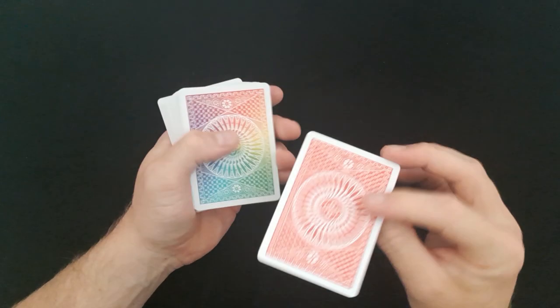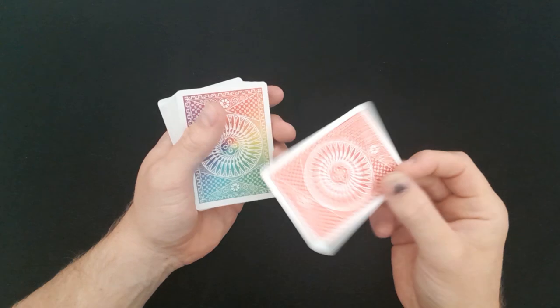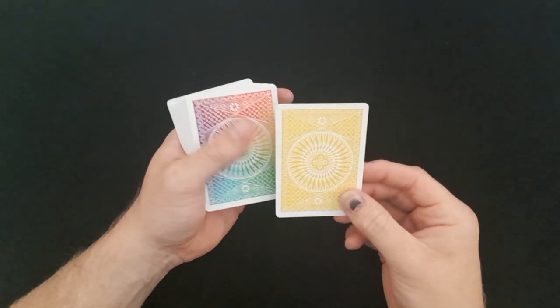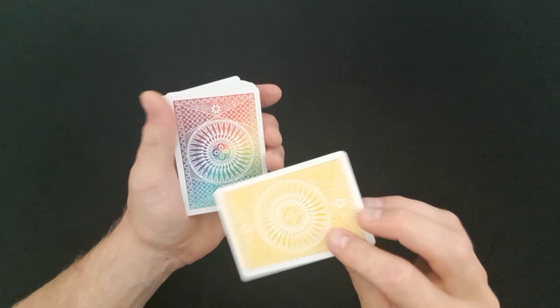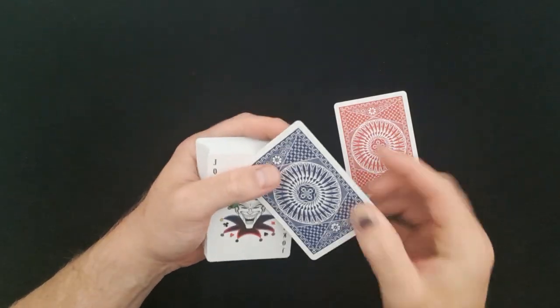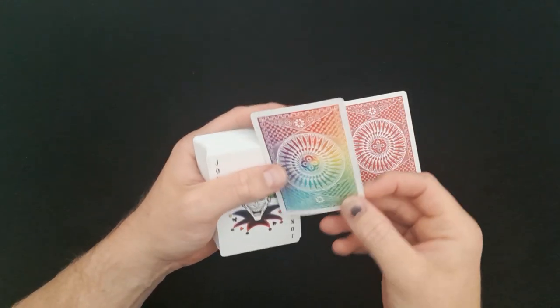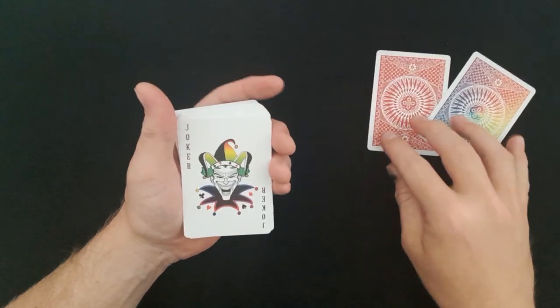Okay so the first thing you can see is there is a gaff card double backer, which is yellow and that sort of burgundy. And then you have another double backer with a sort of blue and then there's the Spectrum Design back, which is really nice.